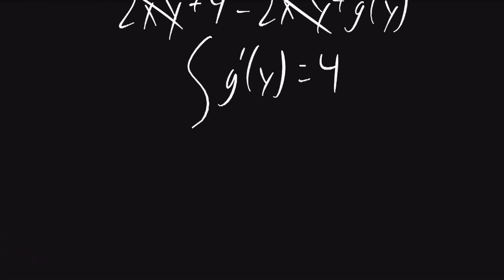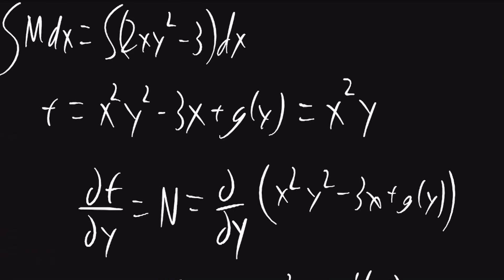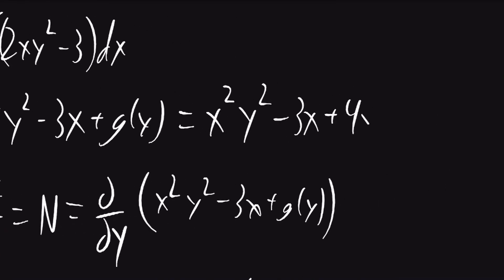We can now take the integral of both of these sides with respect to y. And we'll find that g of y is equal to 4y. We can now plug this into the function up here. We'll get that the function is equal to x squared y squared minus 3x plus 4y.